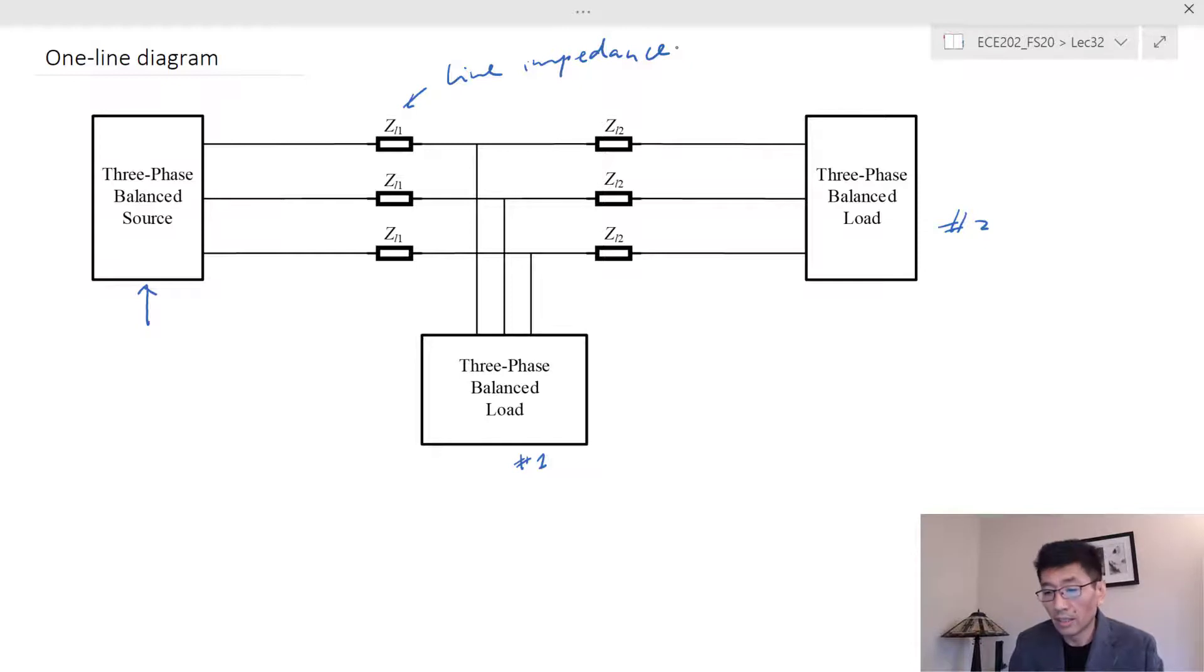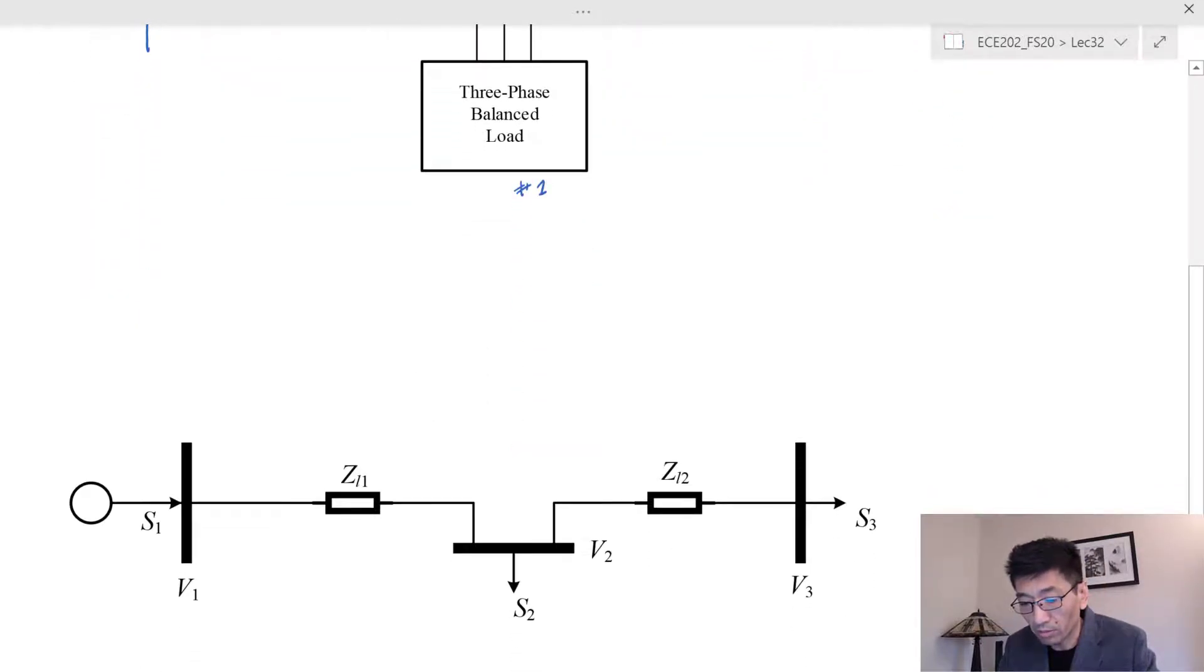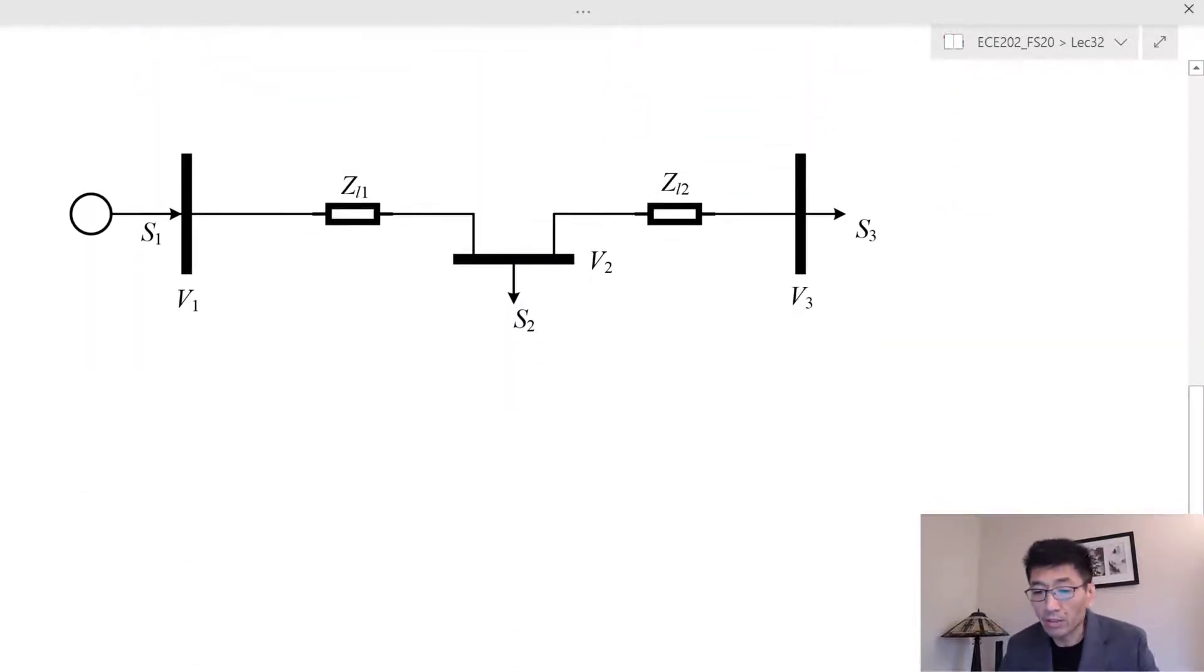So the simplification of that is we can draw this one-line diagram. These are what we call the line segments and we call the buses. We label this—let's say this is bus number one.